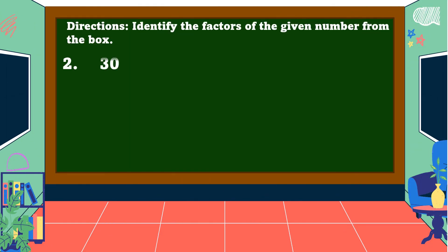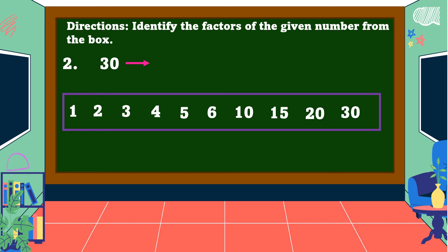Number 2. All right. What are the factors of 30? Fantastic! We have... yes, the factors of 30 are 1, 2, 3, 5, 6, 10, 15, and 30.